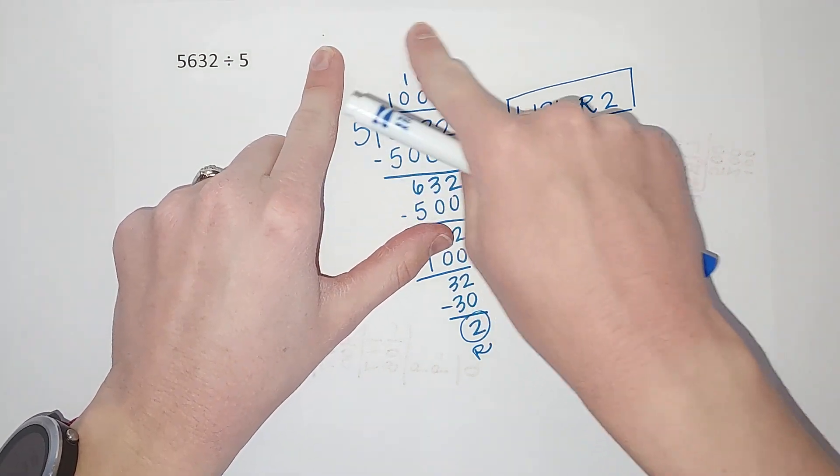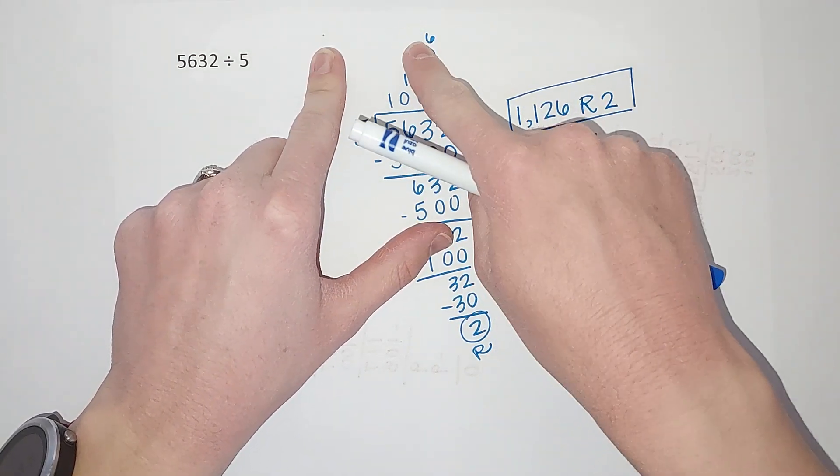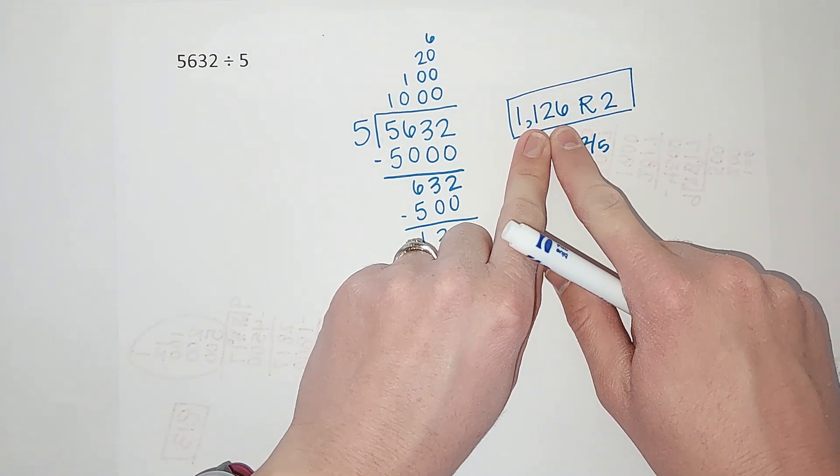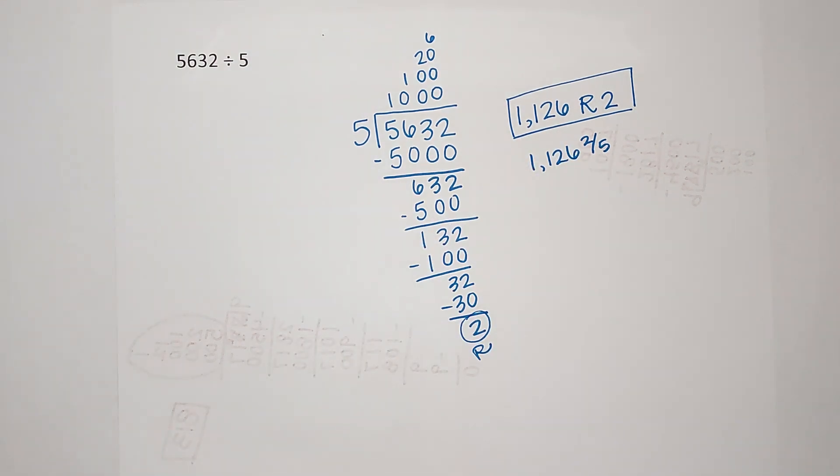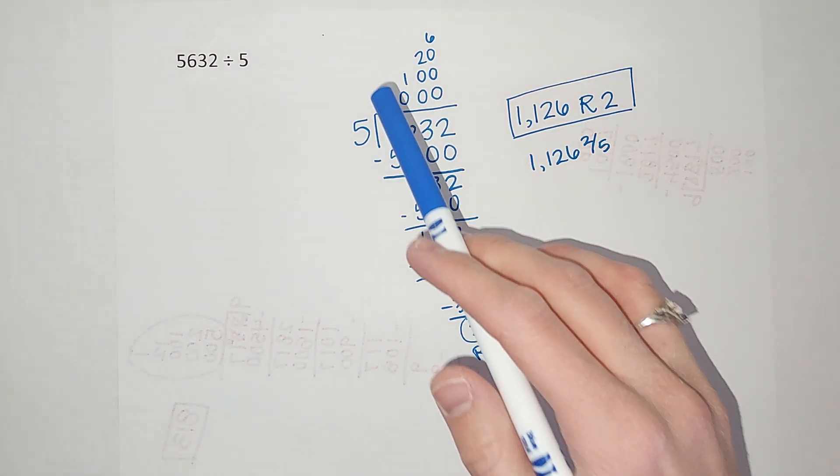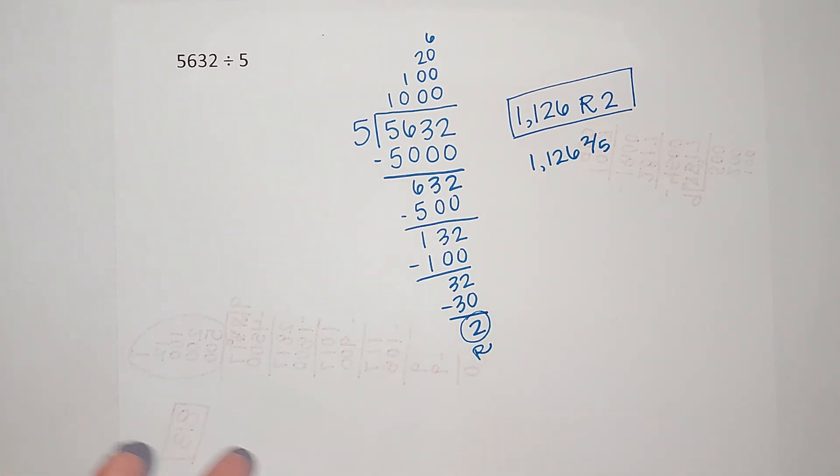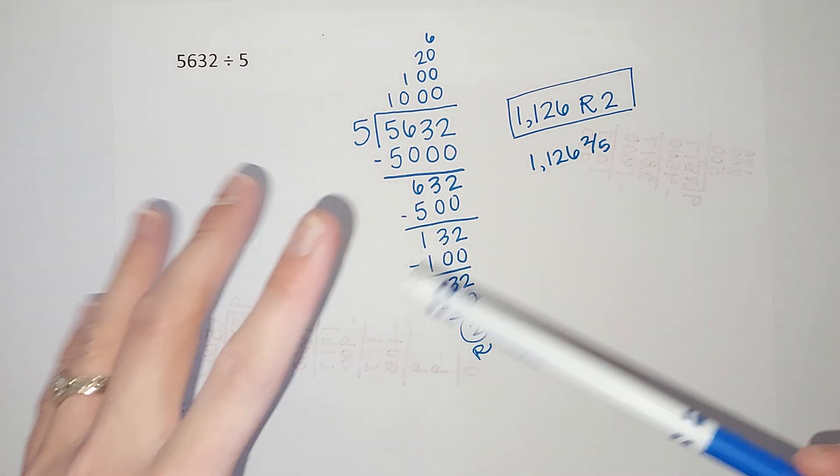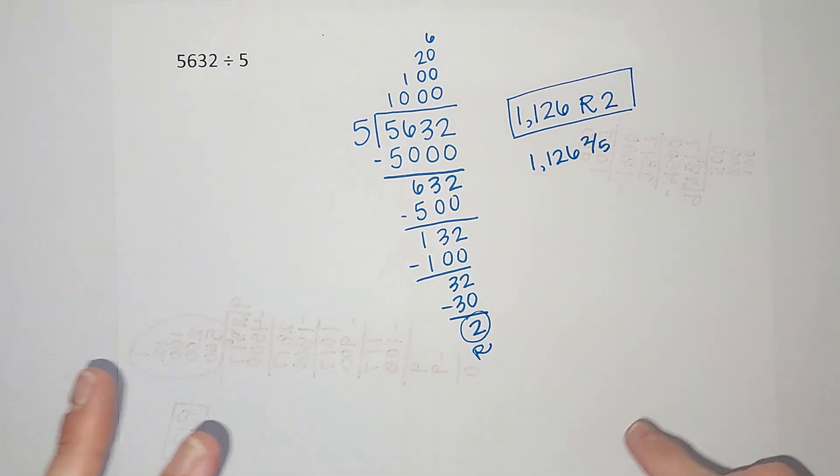If you had realized, oh it goes in 1,100 times, that could have worked. So not everyone has to do it the exact same way to get the same answer. That's why this way is really cool. I'll link an example where I do the same problem two different ways using partial quotients and some other examples in the corner. Good luck getting your homework done.